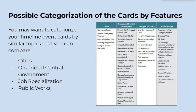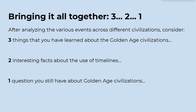You may want to categorize your timeline event cards by similar topics that you can compare: cities, organized central government, job specialization, or public works. After analyzing the various events across different civilizations, consider three things you have learned about the Golden Age civilizations, two interesting facts about the use of timelines, and one question you still have about Golden Age civilizations.